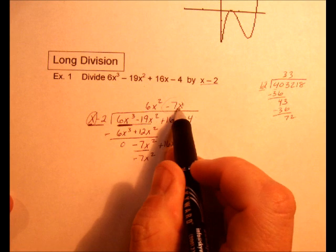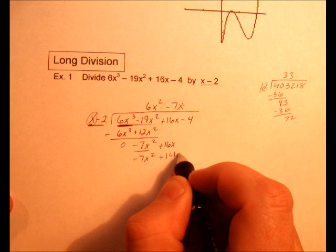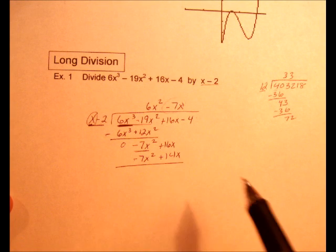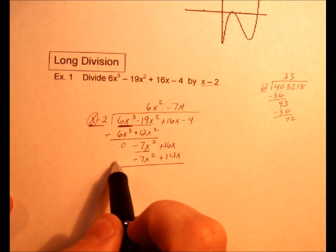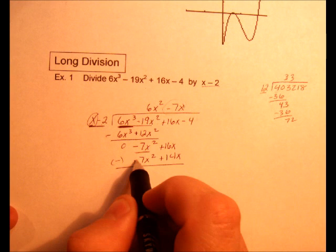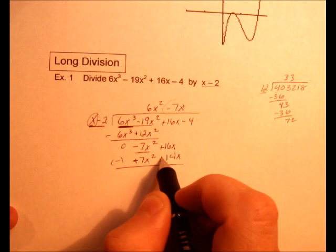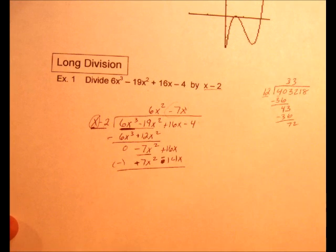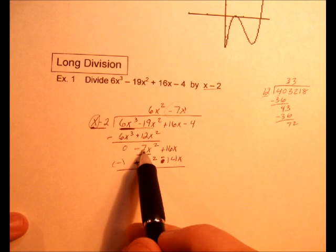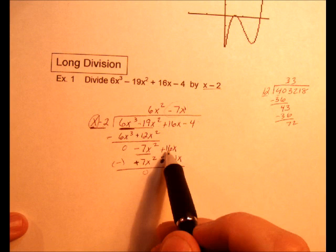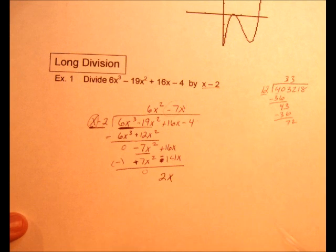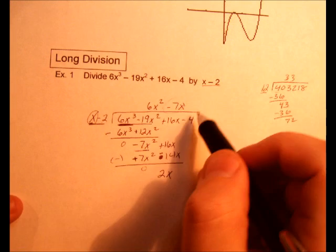We subtract those. And remember, make sure you distribute that negative to both. So what I always do is change those signs just so I don't get myself mixed up and forget to do both of them. And I just add them together. So -7 plus 7 is 0. 16 minus 14x would be positive 2x. And bring down the -4.